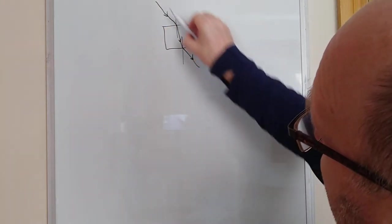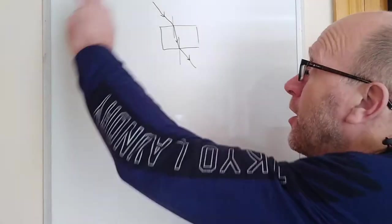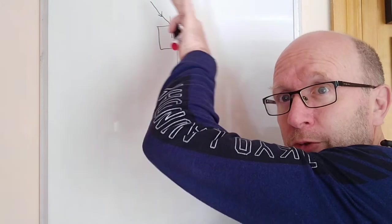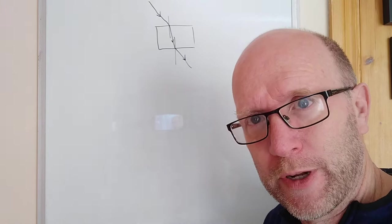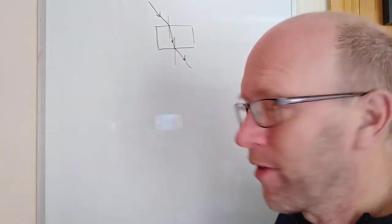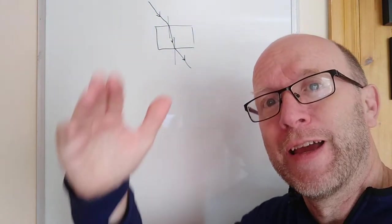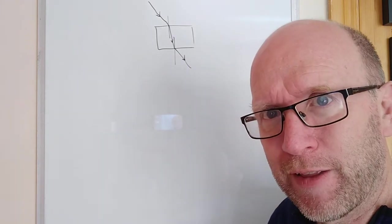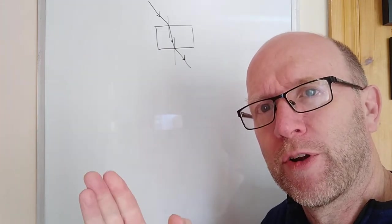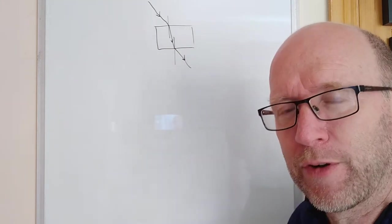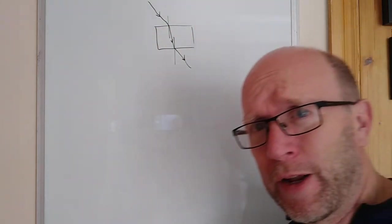Remember the incoming ray and the emerging ray are parallel. Going from a less dense to a more dense medium, the light ray is refracted towards the normal; from a more dense to less dense, away from the normal. Similarly, going from a faster medium to a slower medium it refracts towards the normal; slower to faster, away from the normal.